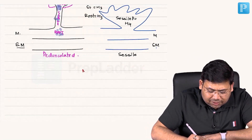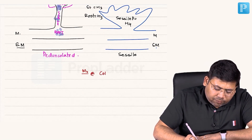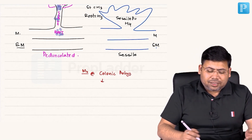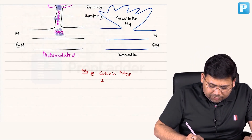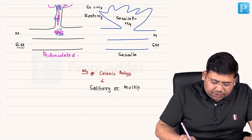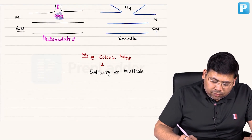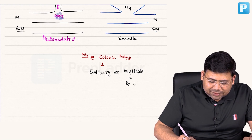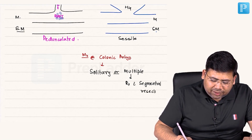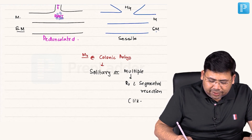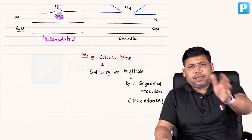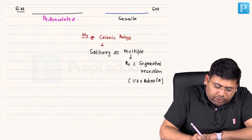Regarding management of a colonic polyp, the first thing to understand is whether the polyp is solitary or multiple. If it is multiple, then management is segmental resection — treated like adenosis. For example, multiple left-sided polyps: left hemicolectomy; right-sided polyps: right hemicolectomy.